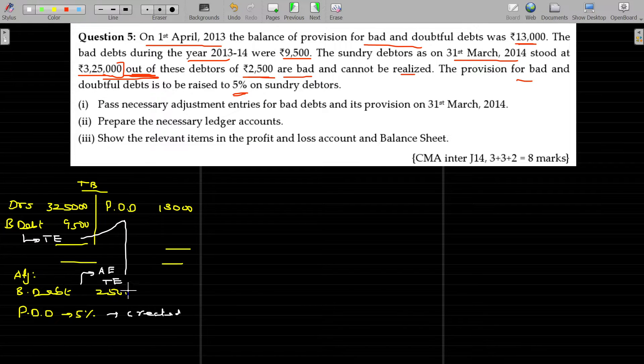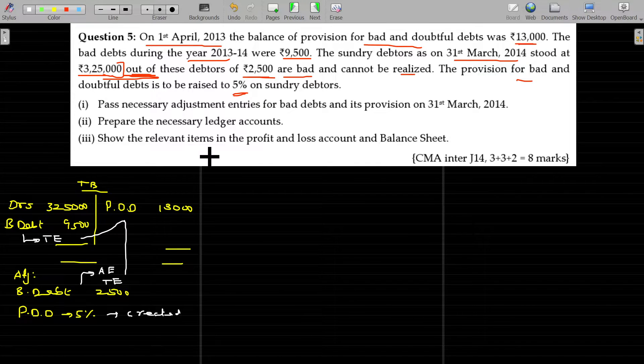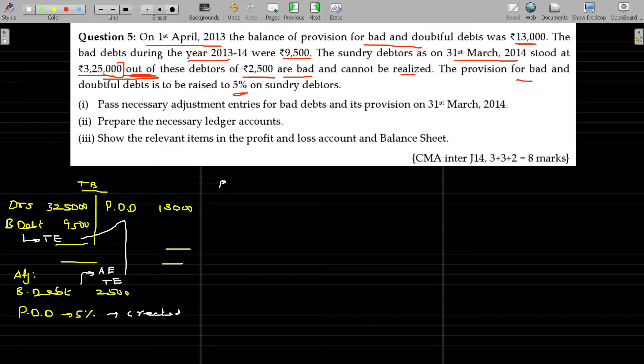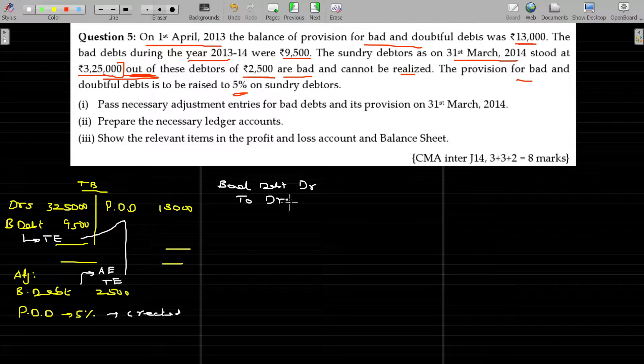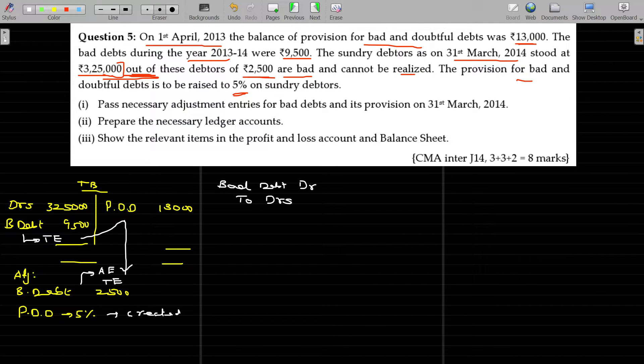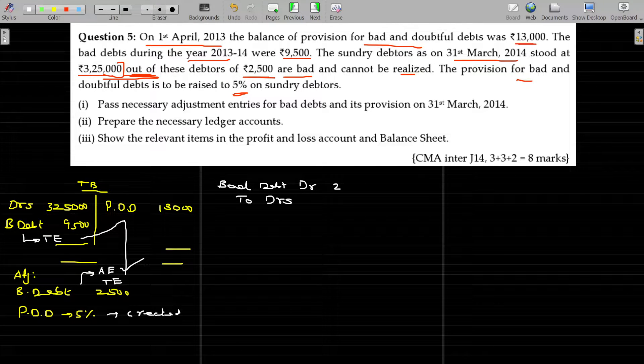Now, the entry for bad debt adjustment entry. Bad debt account debit to debtors. The amount supposed to be created here is this one, adjustment entry, 2,500 over.